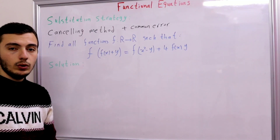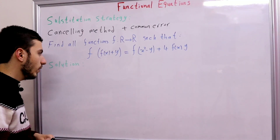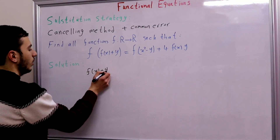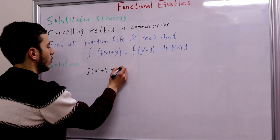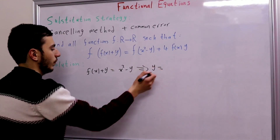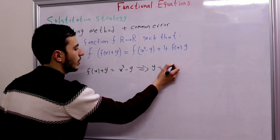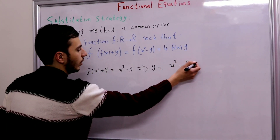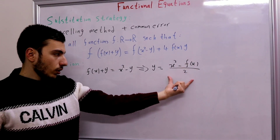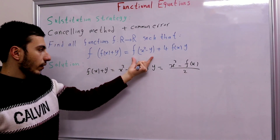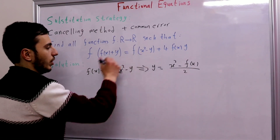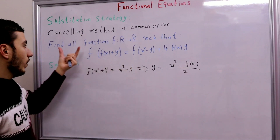How are we going to do this? We will solve the equation f(x) + y = x² - y for y, giving y = (x² - f(x)) / 2. If we substitute y with this quantity, we will cancel the outer f on the left with the f on the right, because we will have f(x) + y = x² - y. That is the idea of the cancelling method.